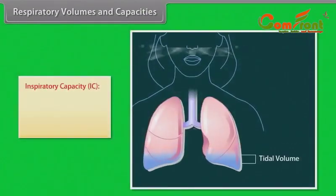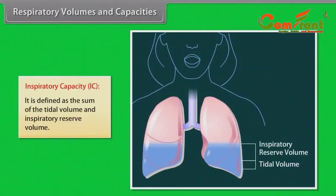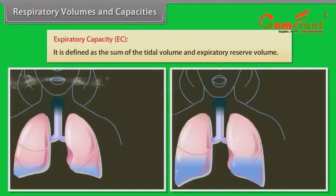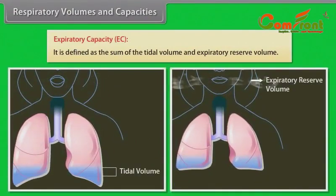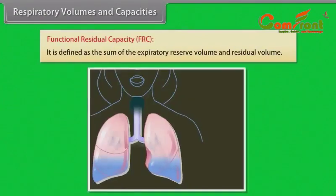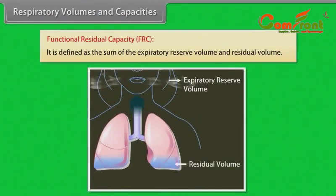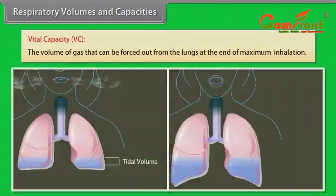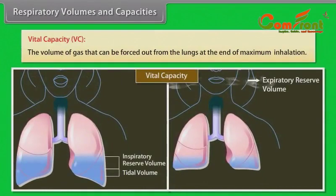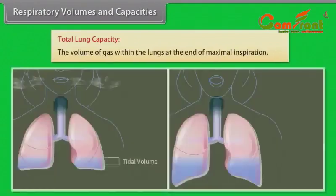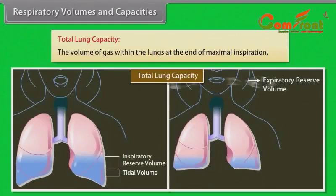Inspiratory capacity (IC) — the sum of the tidal volume and inspiratory reserve volume. Expiratory capacity (EC) — the sum of the tidal volume and expiratory reserve volume. Functional residual capacity (FRC) — the sum of the expiratory reserve volume and residual volume. Vital capacity (VC) — the volume of gas that can be forced out from the lungs at the end of maximum inhalation. Total lung capacity — the volume of gas within the lungs at the end of maximum inspiration.